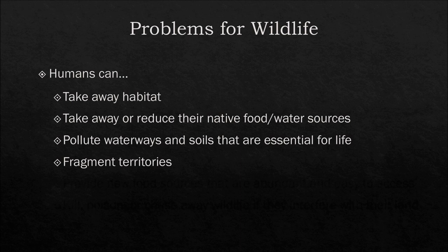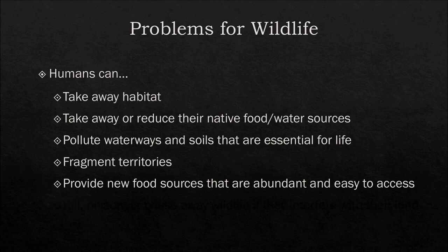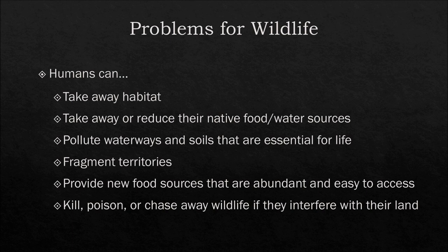Some species can have territories or home ranges of tens to hundreds of miles, so this can pose a huge problem. Humans can also provide new food sources that are abundant and easy to access. While you might think this is positive for wildlife, it allows humans and wildlife to be in closer contact, which is where you get a lot of these conflicts. Finally, humans can kill, poison, or chase away wildlife if they interfere with their land, and this is a more direct form of conflict.